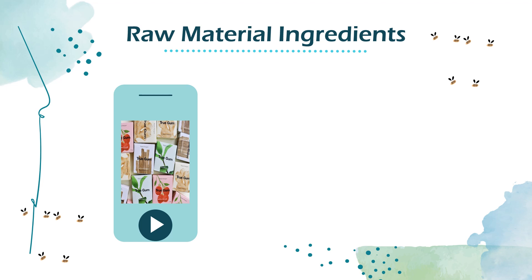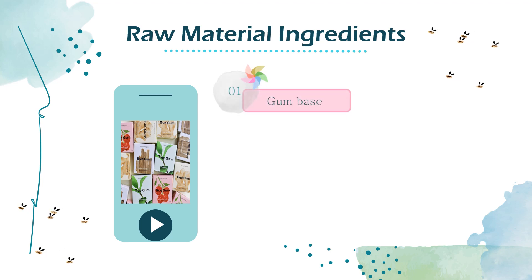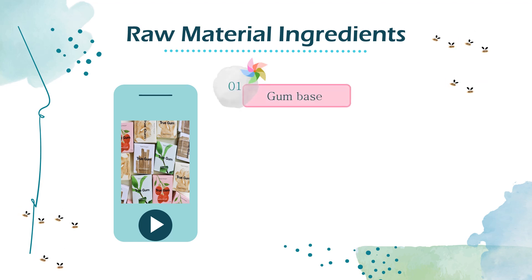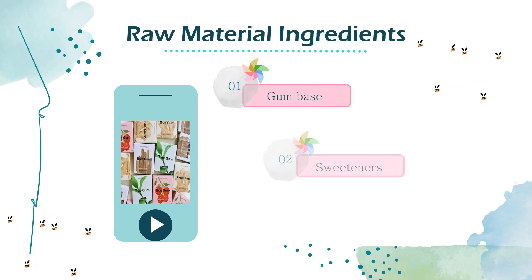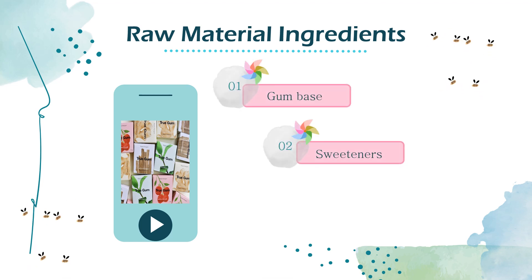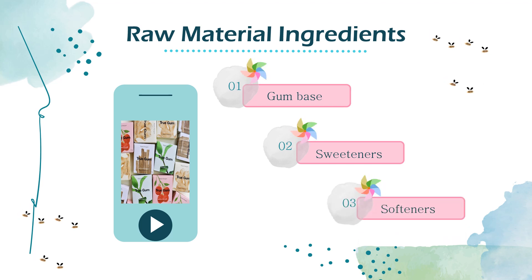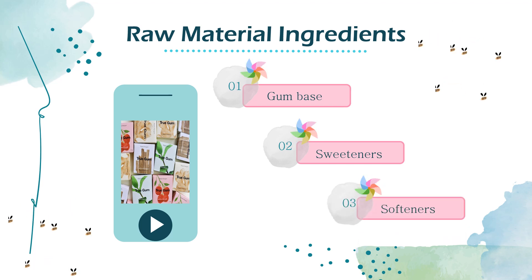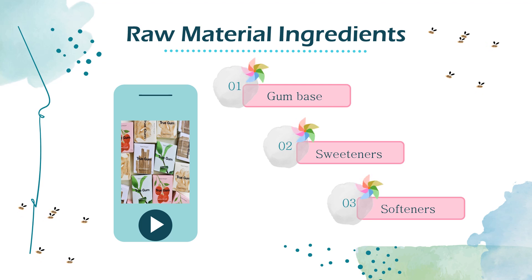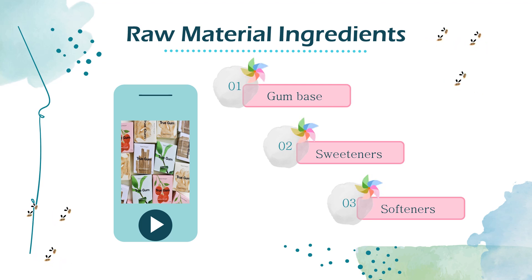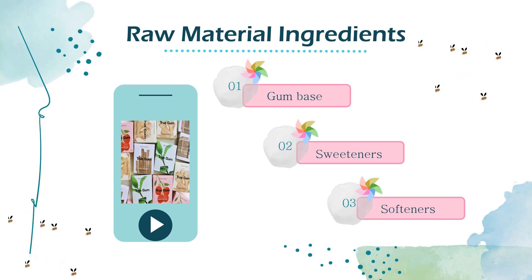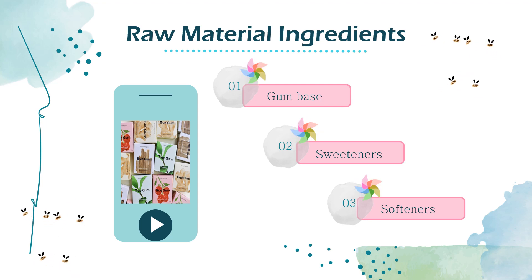Raw material ingredients. Modern chewing gum is composed of gum base, preservatives, sweeteners, softeners, plasticizers, and flavoring. Synthetic polymer polyvinyl acetate is regularly used in chewing gum bases and makes up almost 60% of the gum base.